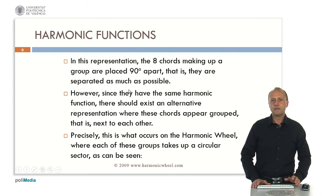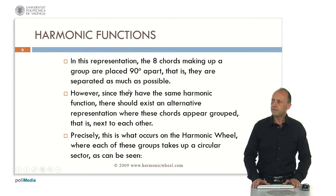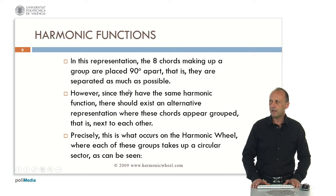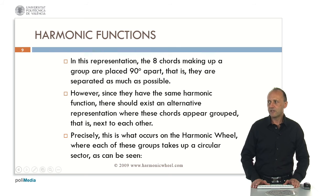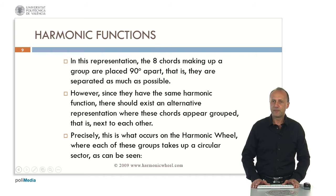In this representation on a cycle of fifths, the eight chords making up a group are placed 90 degrees apart — that is, they are separated as much as possible. However, since they have the same harmonic function, there should exist an alternative representation where these chords appear grouped, that is, next to each other.